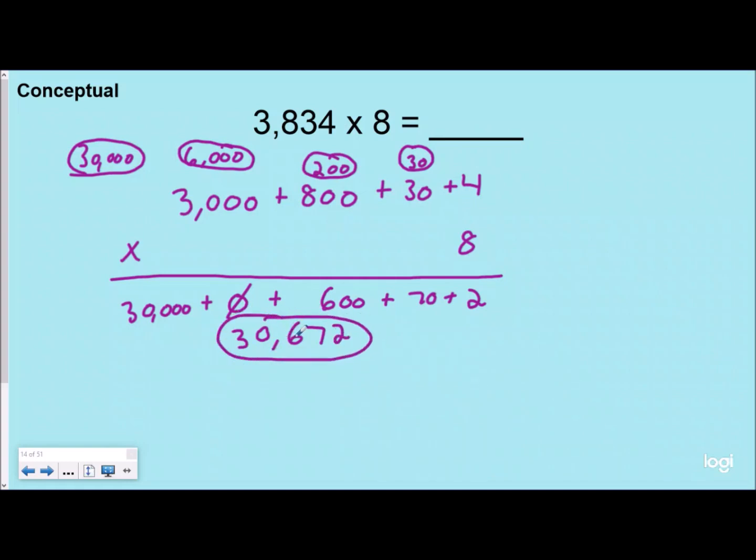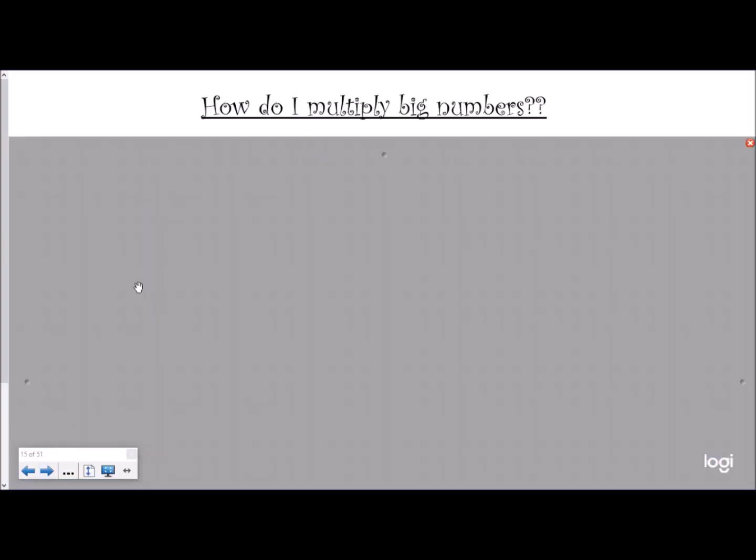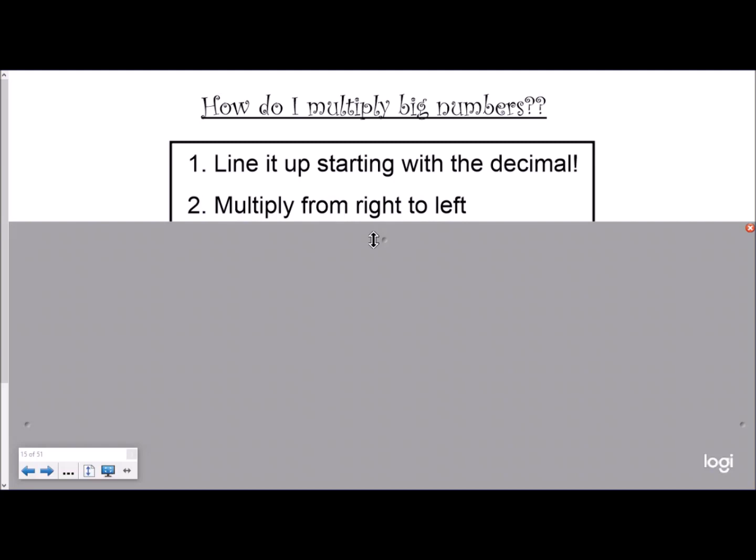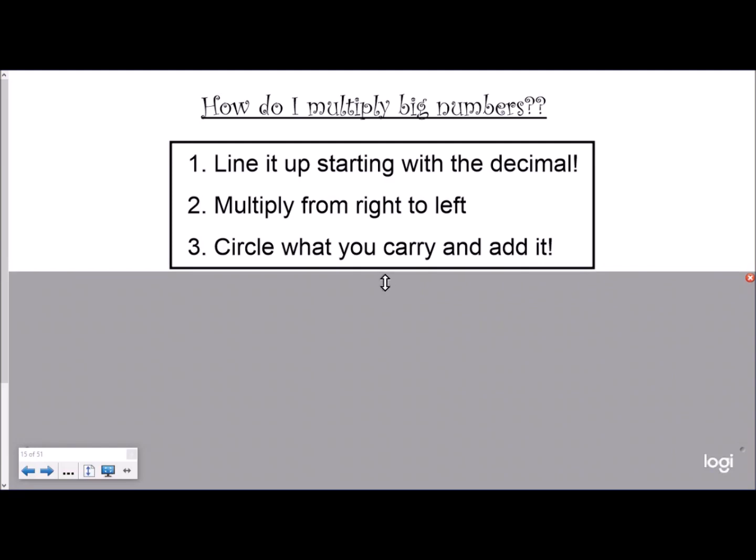So how do I multiply big numbers? Same steps that we saw in the first video of our playlist: I line it up starting with the decimal, multiply from right to left, ones place to whatever the bigger place values are there to the left, circle what you carry or regroup, and then add it right after you multiply.